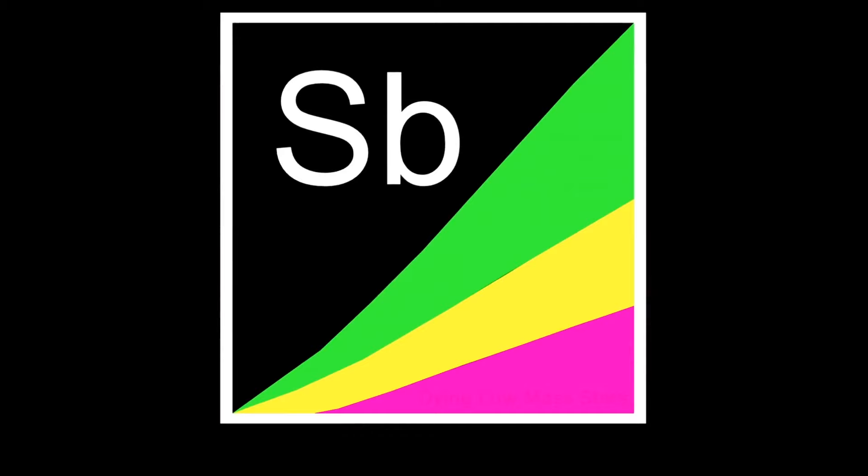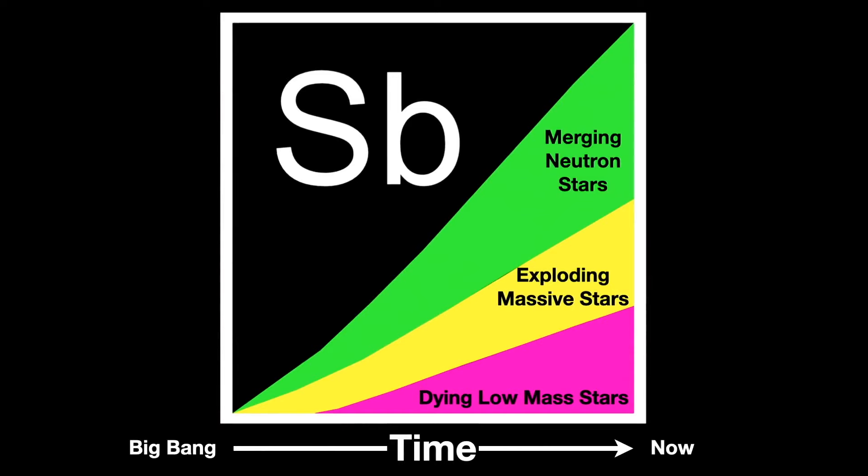The horizontal axis of this square represents time, from the Big Bang to now. The vertical axis shows the proportion of antimony created by various processes. More than a third of the antimony present today is believed to be from merging neutron stars, again, more than any other element. Note that the antimony produced by dying low-mass stars, the magenta area, doesn't get started till a bit later. This is because low-mass stars exhaust their nuclear fuel much more slowly and last a long time before they start dying.